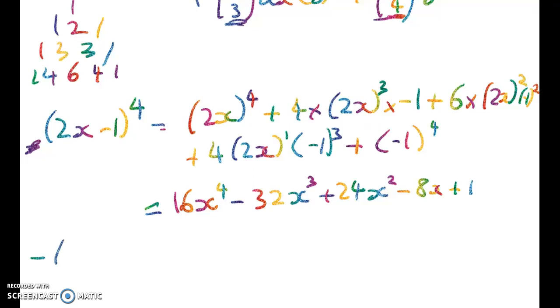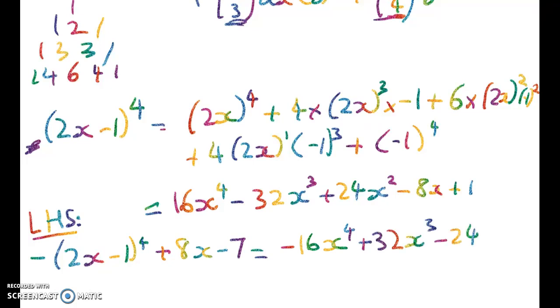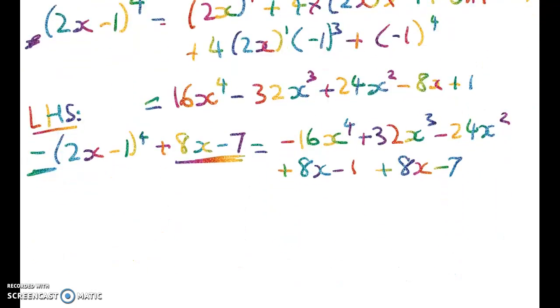When we clean that up, here's what we get: 16x to the power of 4 minus 32x cubed plus 24x squared minus 8x plus 1. Up here, our left hand side is negative 2x minus 1 to the 4 plus 8x minus 7. So we can now simplify that. So much of maths is cleaning things up. There we go. So 32x cubed minus 24x squared plus 16x minus 8. That's looking nice because I can see a factor of 8 coming out there.